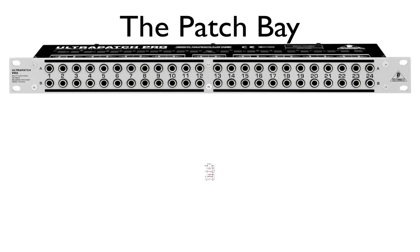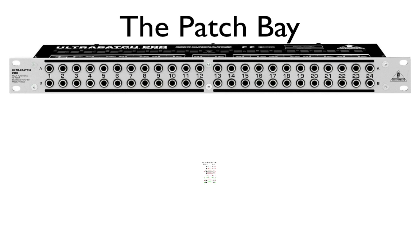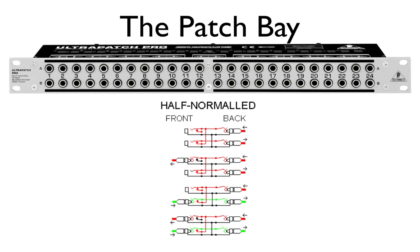Let's take a look at our second diagram here, half-normaled. Half-normal is when the contacts of two jacks on the rear are interconnected. When you insert a plug into the upper front jack, the signal routed through the rear path is not interrupted. Only when the front lower jack is used will the rear panel route be split up so that the two upper and lower jacks are connected to one another. This configuration is called input break and is used mainly for insert paths. You can easily patch the signal from a mixing console channel at the patch bay without interrupting the signal flow in the channel.